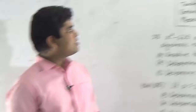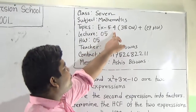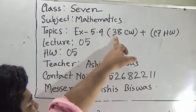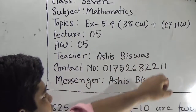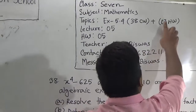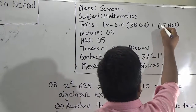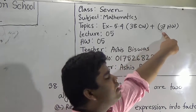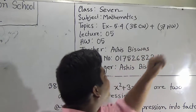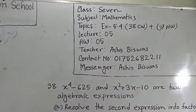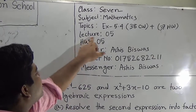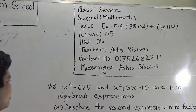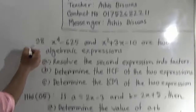Our today's topic is exercise 5.4. In our exercise, we shall solve question 38 as CW and question 37 will be your SW. I repeat: question 38 is your CW and question 37 will be your SW. Today is our lecture number 5 and SW number 5 also. So let us start our class.